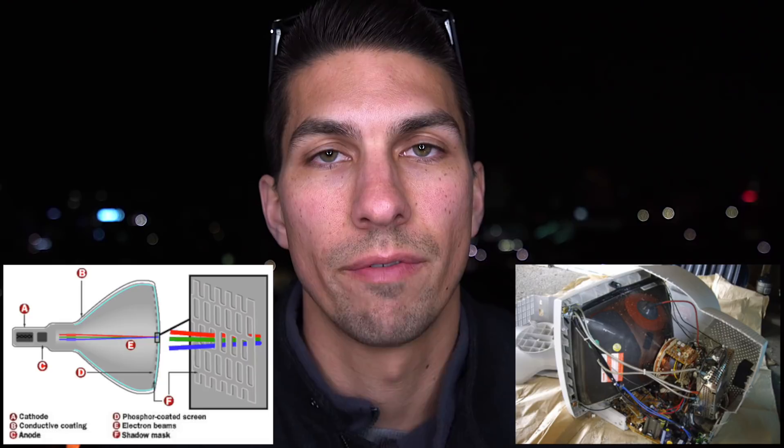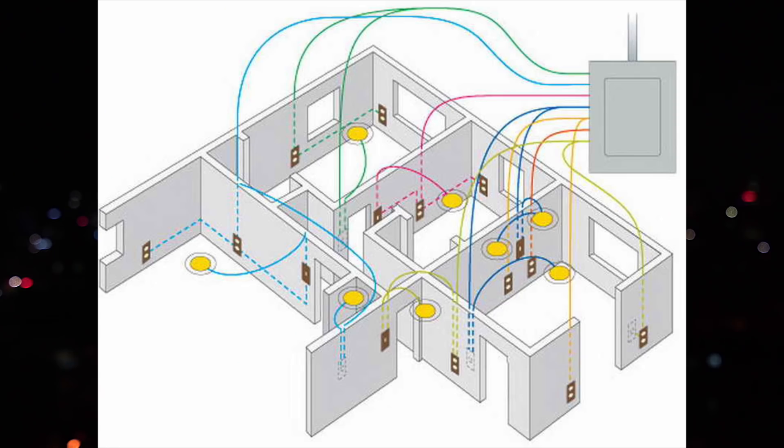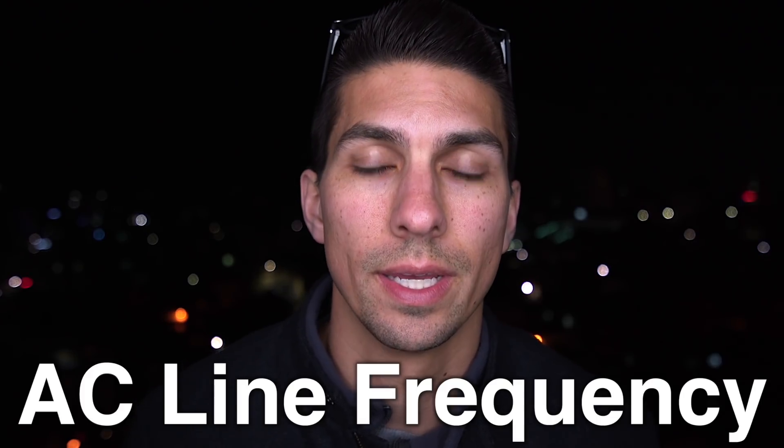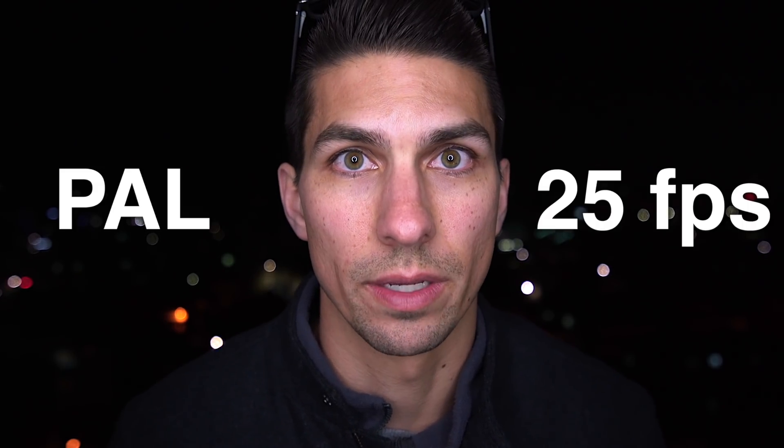For about 50 years, TVs were made using CRT monitors — cathode ray tube — and the limitations of vacuum tube technology required that displays be refreshed at an AC line frequency. That's the flow of electric power running through the lines in your walls, which has an AC line frequency of 60 Hertz in the US and 50 Hertz in Europe. This limited TV refresh rates to a multiple of 60 in the US and 50 in Europe. Since 24 frames per second wasn't a multiple of either frequency, the US adopted the NTSC format at 30 frames per second, and Europe adopted the PAL format at 25 frames per second.